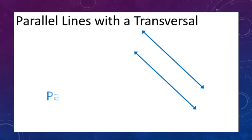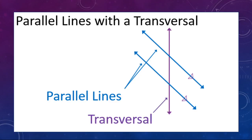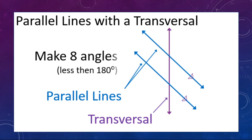Here we have our parallel lines, and a transversal is a line that intersects both lines — there's our transversal in purple. When we have a diagram like this, it makes eight angles: at the top intersection we have four angles, and the intersection down here is another four angles, for a total of eight.